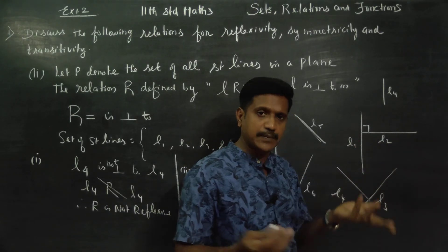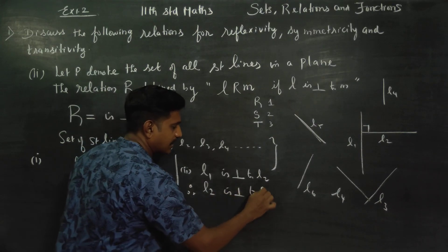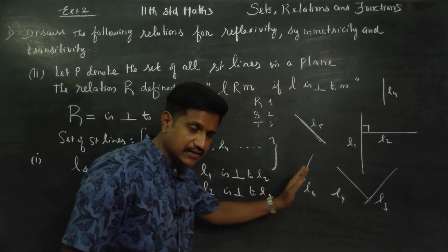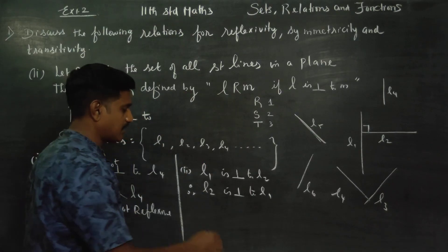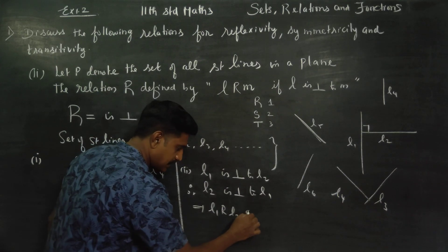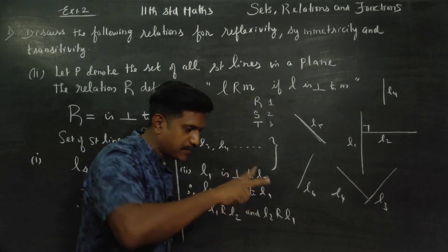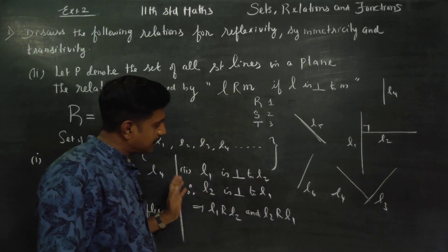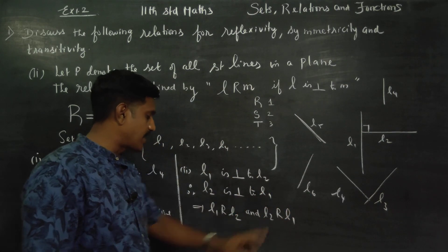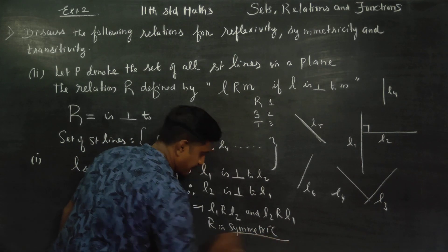For symmetry: if L1 is perpendicular to L2, then L2 is also perpendicular to L1 — two lines, straight, reverse. That's why L1 related to L2 and L2 is also related to L1. So R is symmetric.